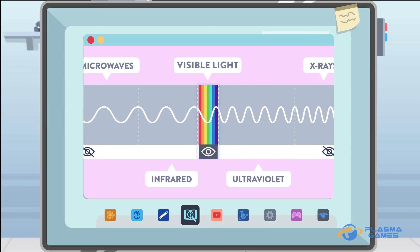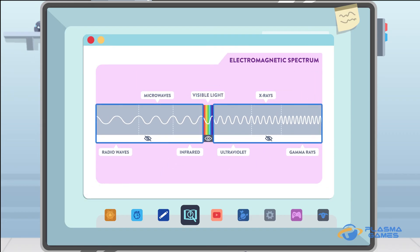Human eyes can only see light waves within a very small frequency range. There is a large range of non-visible light waves that make up the entire electromagnetic spectrum.